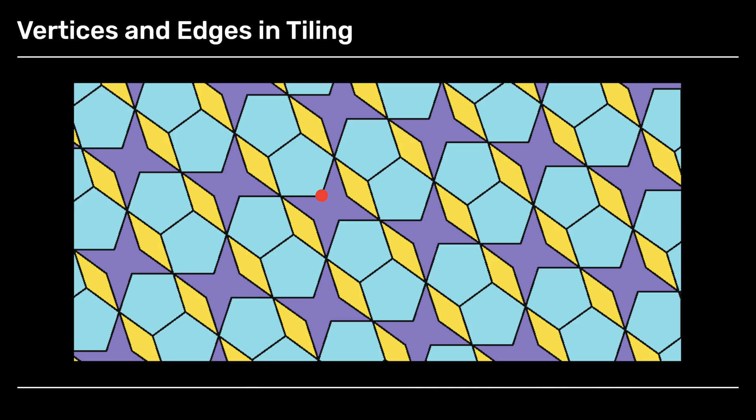Now we have to be a little careful with this because if we have polygonal tiles, those polygons can have corners that are not vertices. In this example, notice that red dot. That is a corner of the purple tile and a corner of the blue tile that meet there. But it is not a vertex because it does not have three tiles meeting at that particular point.